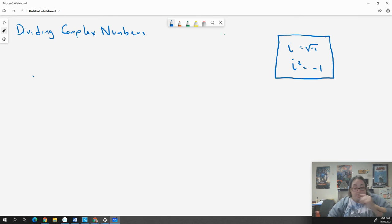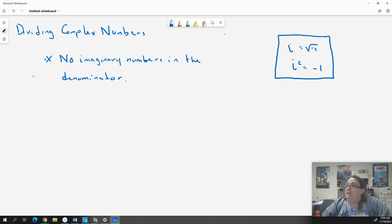When we're dividing complex numbers, there is a rule: no imaginary numbers in the denominator. That means if I have a fraction and there is an i on the bottom, I have to get rid of it. I can't just throw it away - I have to turn it into a real number. The cool thing about complex numbers is they have what we call a conjugate that can make them real.